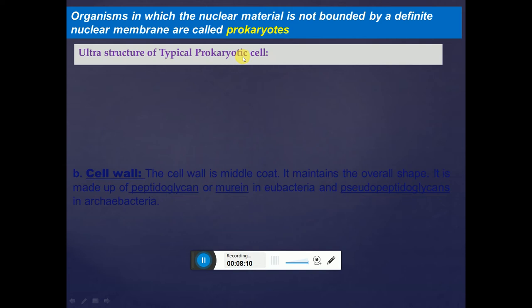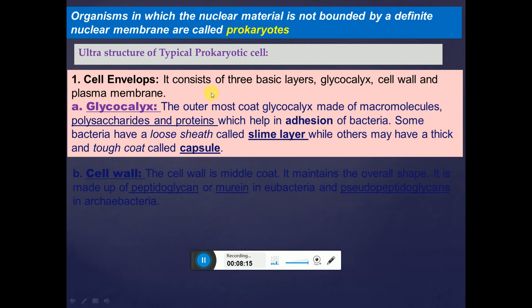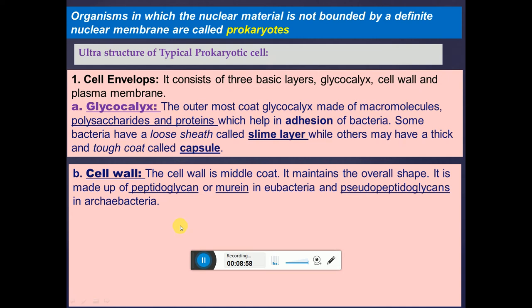Moving to the ultrastructure of a typical prokaryotic cell — the cell envelope consists of three basic layers that work together: the outermost coat is the glycocalyx, the middle is the cell wall, and the innermost is the plasma membrane. The glycocalyx is made up of macromolecules of polysaccharides and proteins and helps in adhesion. Some bacteria have a loose sheath called the slime layer, while others have a thick, tough coat called the capsule. The cell wall maintains overall shape and is made up of peptidoglycan or murein in eubacteria, and pseudopeptidoglycan in archaeobacteria.